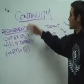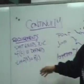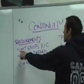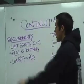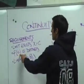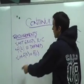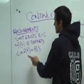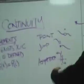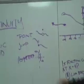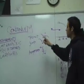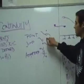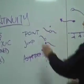As Edgar already discussed, the requirements for continuity are: the limit must exist at x equals c, the function f(c) is defined, and the limit of f(x) equals f(c). Now I'm going to show you types of continuity. First, we have point discontinuity.